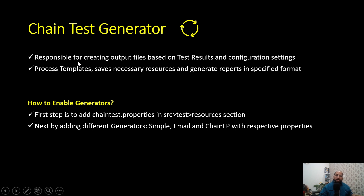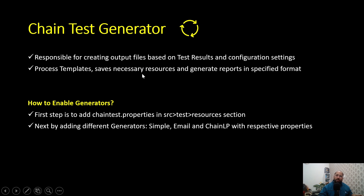The Chain Test Generator is responsible for creating output files based on test results and configuration settings. As we execute test cases, we will have test results. There is one configuration file in Chain Test Report called chaintest.properties, similar to extend.properties. Based on these two inputs, it will generate output files, process the template, save necessary resources such as screenshots on failure, and generate reports in the specified format — also specified in chaintest.properties.